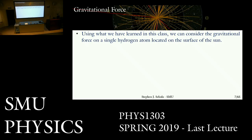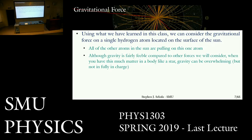Let's think about the gravitational force on that hydrogen atom. We can use Newton's law of gravitation to calculate this. We already have things like the mass of the sun, and we can think about one hydrogen atom sitting right above the photosphere with all the other mass of the sun pulling on it. Although gravity is fairly feeble compared to other forces, when you have this much matter in a body like a star, gravity can be overwhelming. There's a reason we orbit the sun once a year at the distance we do — it's because the sun holds onto us through its gravitational force.